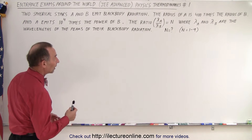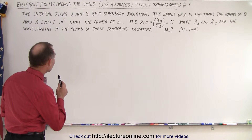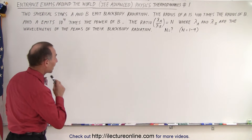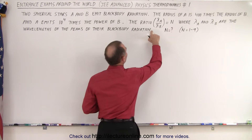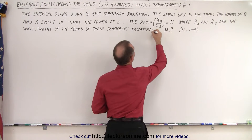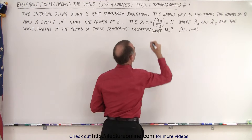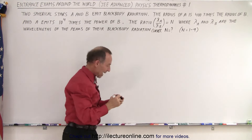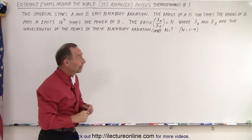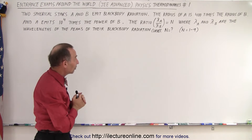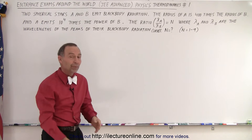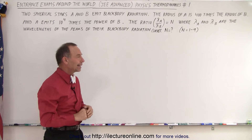The ratio lambda A over lambda B is equal to N, where lambda A and lambda B are the wavelengths of the peaks of their blackbody radiation curves. They want to know the value of N — the ratio of lambda A to lambda B — and N is a number somewhere between 1 and 9.